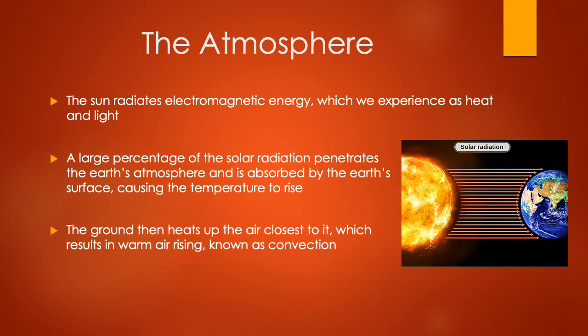The sun radiates electromagnetic energy, and that's how we experience heat and also light. A large percentage of solar radiation penetrates the Earth's atmosphere and is absorbed by the Earth, which causes the temperature of the Earth to rise. As this radiation hits the Earth, it will heat the Earth and then also heat the ground around it. As the ground heats up, it will also heat the air just above it, and that will cause air to rise. This is known as convection — where air is heated from below and then rises up into the atmosphere.